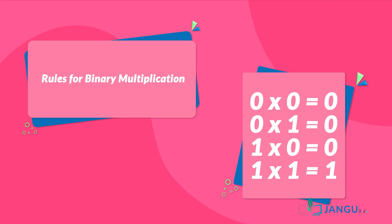One times zero is equal to zero, and one times one is equal to one.